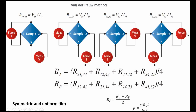Once we have the sheet resistance Rs, the resistivity ρ is calculated as ρ = π·Rs·T / ln2, where π/ln2 is a constant, Rs is the sheet resistance, and T is the sample thickness (in centimeters, meters, or micrometers). The resulting resistivity has units of ohm·meter.